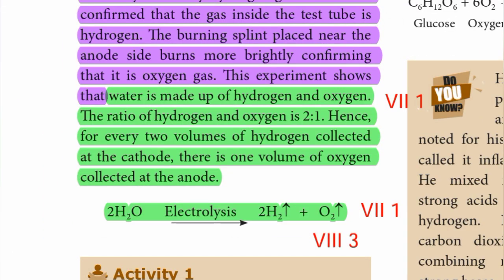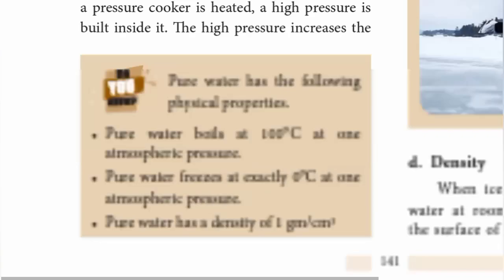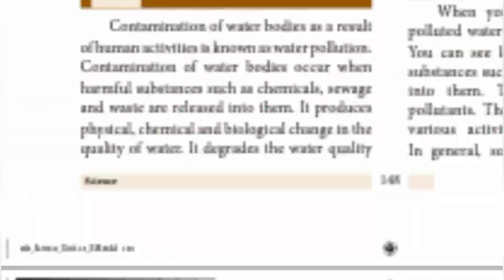Water is made up of hydrogen and oxygen. The ratio of hydrogen and oxygen is 2:1. Hence, for every 2 volumes of hydrogen collected at the cathode, there is 1 volume of oxygen collected at the anode. The equation is: 2H₂O (electrolysis) → 2H₂ + O₂.